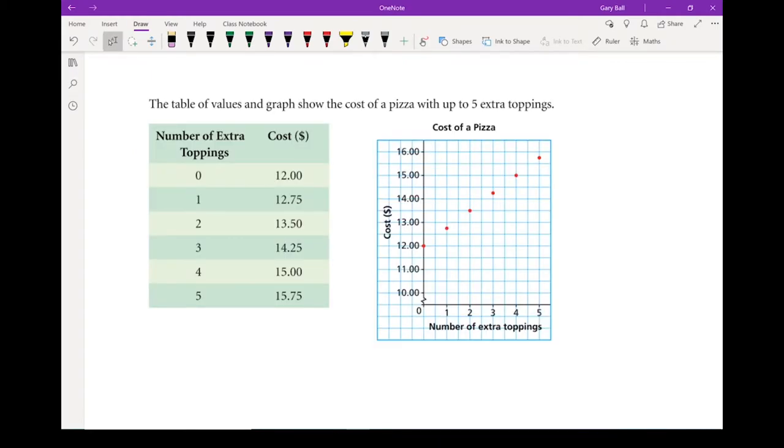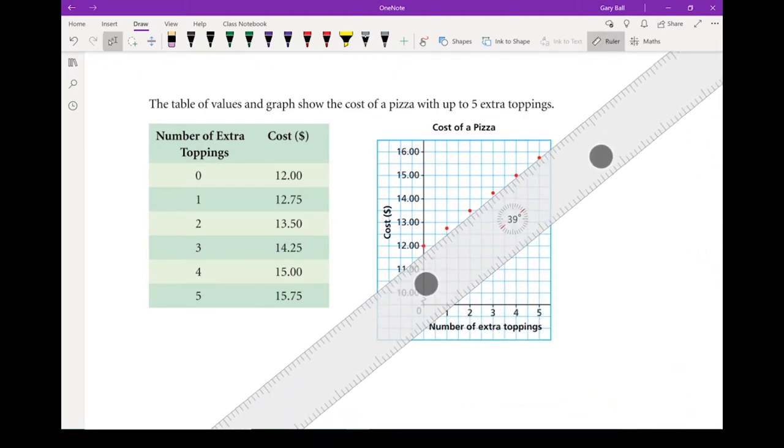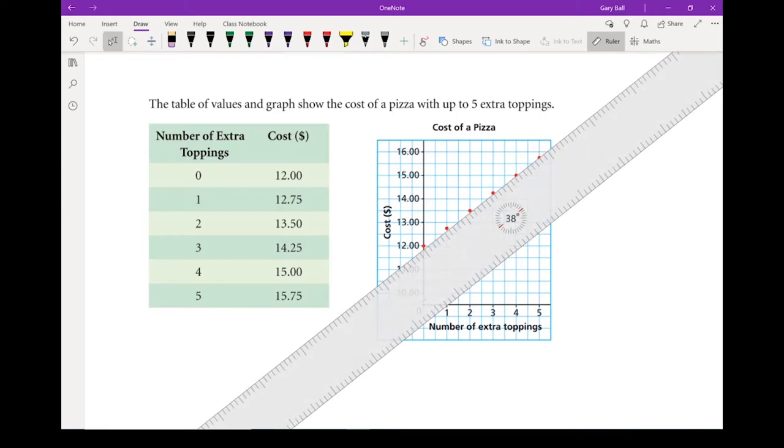Here's a situation. Table of values on a graph showing the cost of a pizza with up to 5 extra toppings. And the more toppings you get, the more cost goes up. So, the question is, is this a linear equation? Let's go first to the graph because it's the easiest one to check. Are the lines in a straight line? Are they linear? I put a ruler along it. Yeah, they are. It's linear. They follow a straight line.